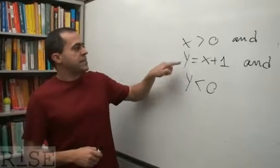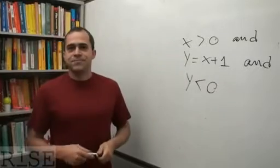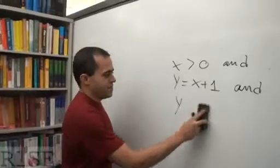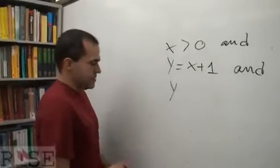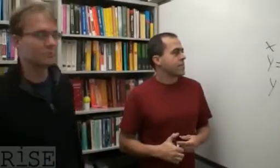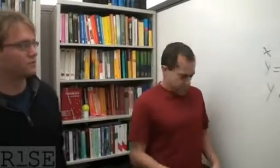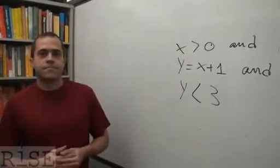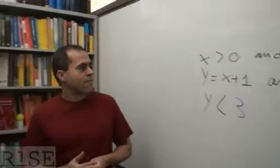So what happens when there is a solution? Z3 is going to give you values for x and y that make the formula true. So we could take, we could change the formula and make it satisfiable. So if we say that instead of y being less than zero, y is less than three, then we can say that a legal interpretation or model for the formula is one where x is assigned to one and y is assigned to two.